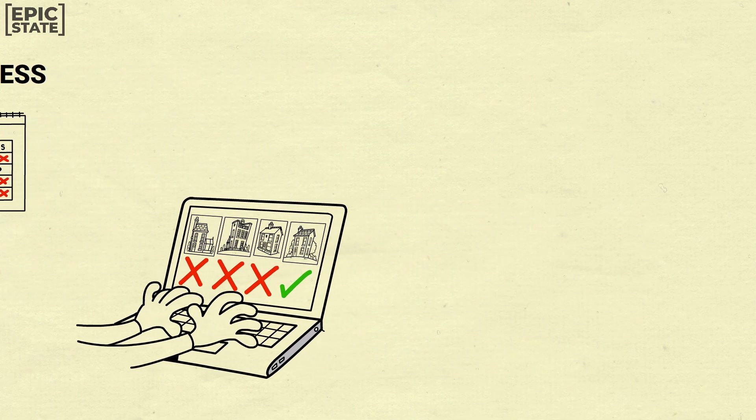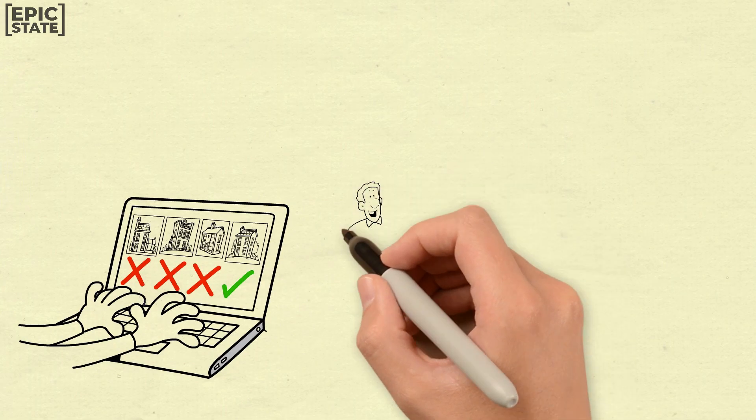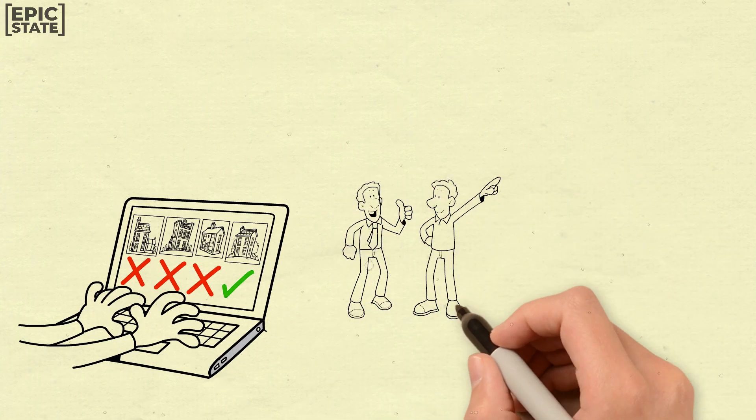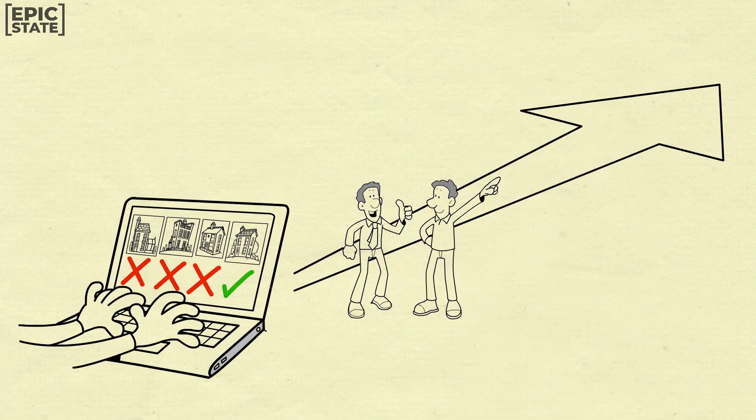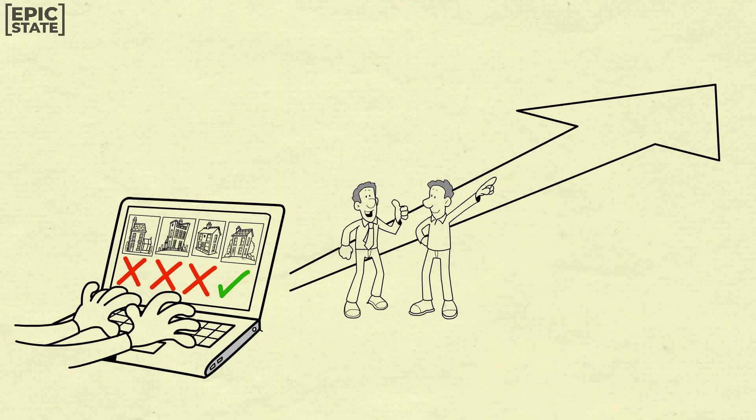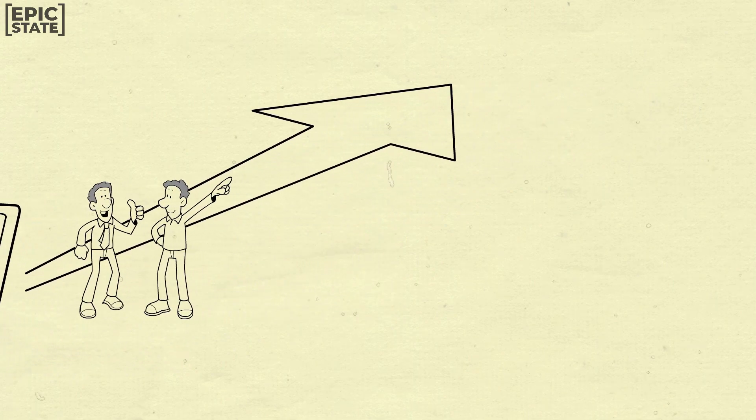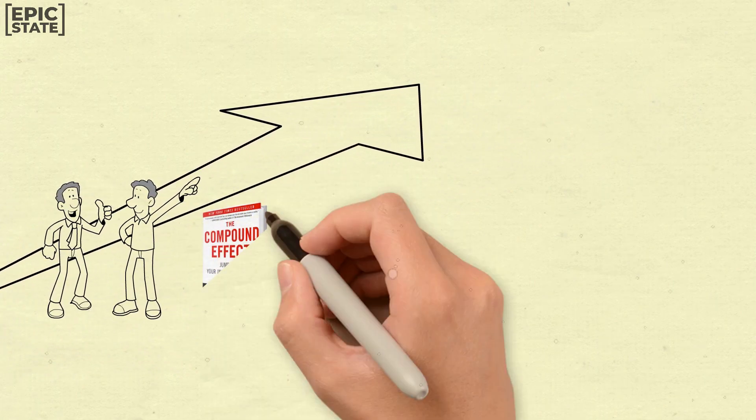You could also use the 80-20 rule to make your business more effective as you move forward. The compound effect is a powerful practical guide that helps readers understand how small, consistent actions can lead to significant results over time.